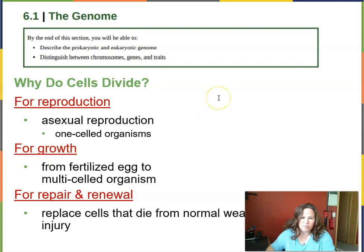Our objectives for Section 1, the genome, are to describe the prokaryote and eukaryote genome and distinguish between three things: chromosomes, genes, and traits. But let's start off by asking ourselves, why do cells need to divide in the first place?